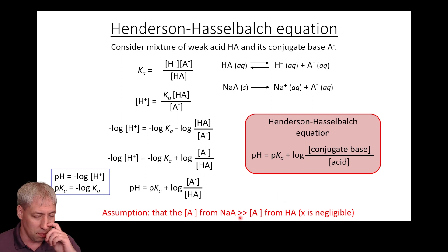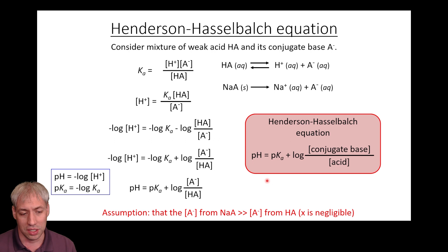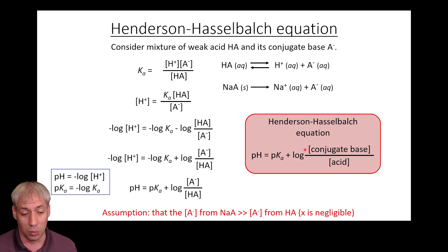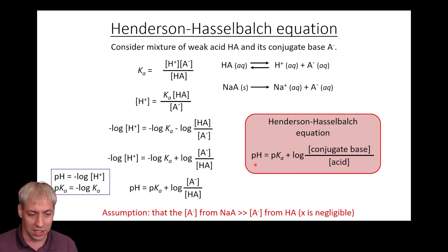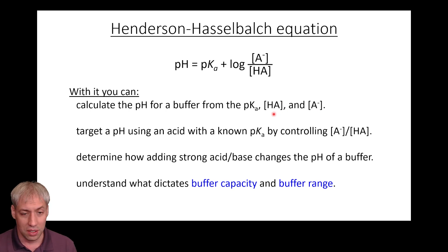There are a few assumptions built into this. You can do ICE table math to figure out the relationship, but if the Ka value is small, the X value in the ICE table is negligible and the math simplifies to the Henderson-Hasselbalch equation. So for a weak acid and its conjugate base, pH = pKa + log([A⁻]/[HA]). If you know the pKa and the concentrations of HA and A⁻, you can calculate the pH that the solution will stay at.